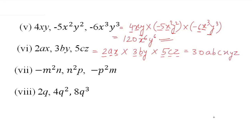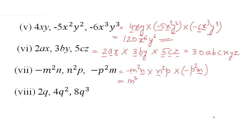Next: −m²n × n²p × (−p²m). Numbers नहीं हैं, तो देखें signs: negative × negative = positive, so result positive होगा। m² × m = m³, n × n² = n³, p × p² = p³. Answer है m³n³p³.